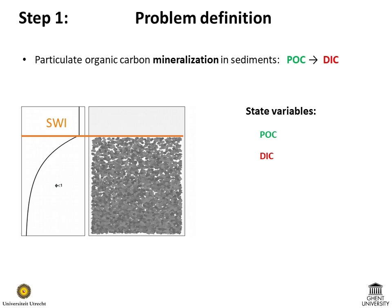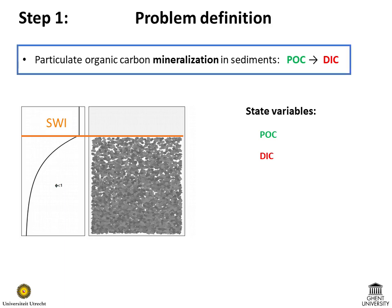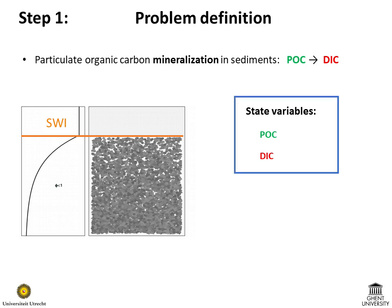First, we define the problem and the relevant state variables and processes that we are going to model, including their units. In this example we consider a sediment in which particulate organic carbon is mineralized into dissolved inorganic carbon. Our state variables will be the concentration of particulate organic carbon in the sediment and the concentration of dissolved inorganic carbon in the pore water. We denote them as POC and DIC.